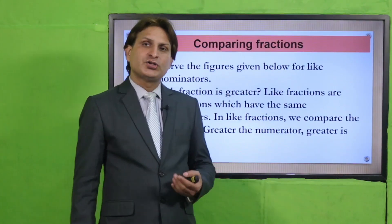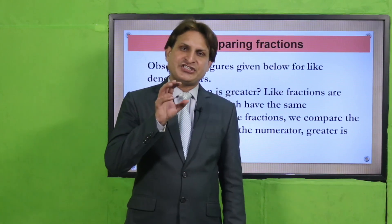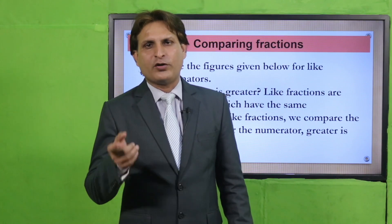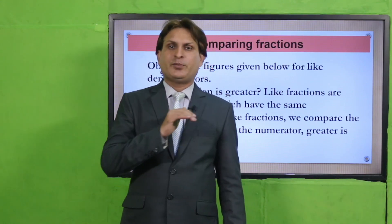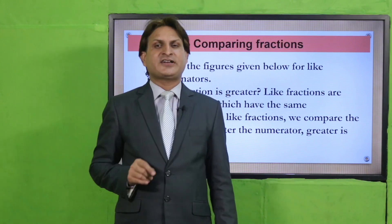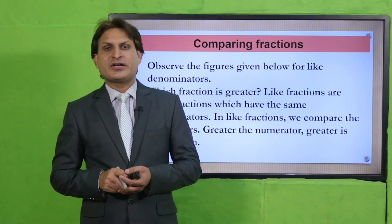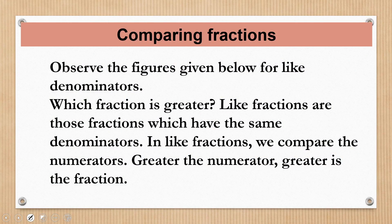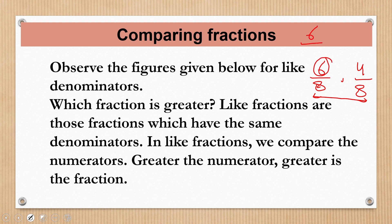جو main rule ہے fractions کو compare کرنے کا: جب بھی آپ نے two or more fractions کو compare کرنا ہے تو آپ نے ان کے denominators same کر لینے ہیں. ساری fractions کے denominators اگر same ہوں گے تو ان کو ہم like fractions کہیں گے. اور پھر ان کے numerators کو compare کرنا ہے. جیسا کہ 6/8 اور 4/8 — دونوں کے denominators same ہیں، تو پھر numerator compare کریں گے. جس fraction کا numerator greater ہوگا وہ fraction greater ہوگی — so 6/8 is greater than 4/8. اور جس fraction کا numerator less ہوگا، وہ fraction less ہوگی.